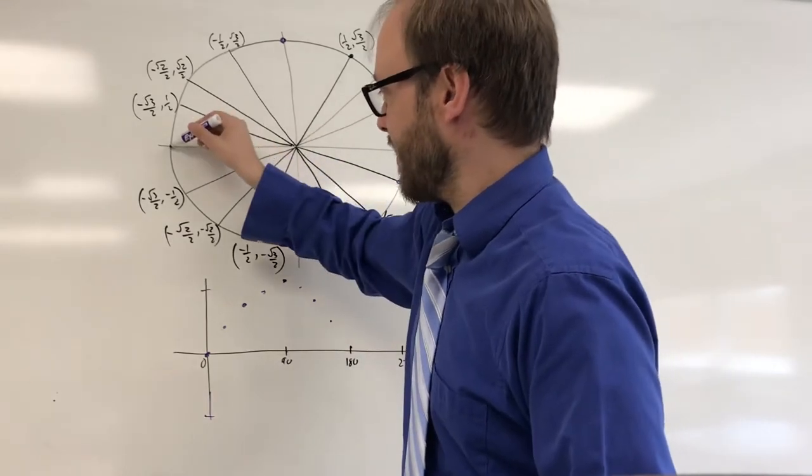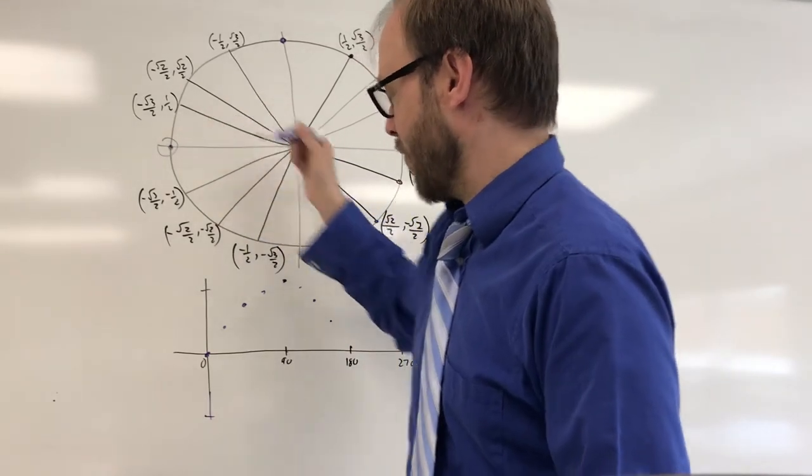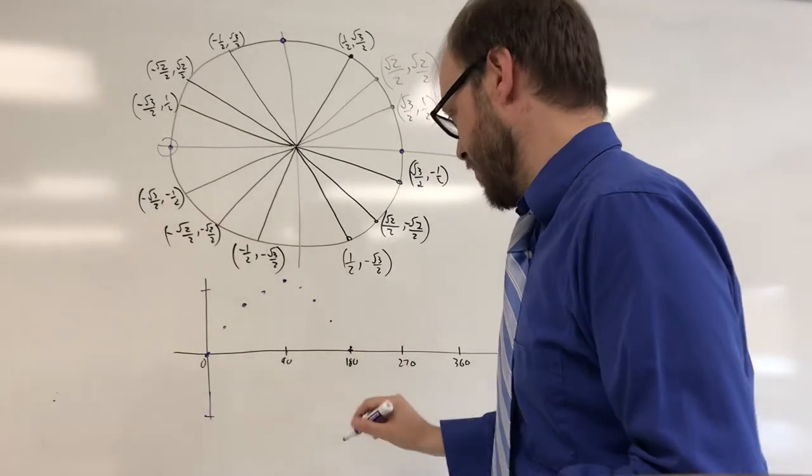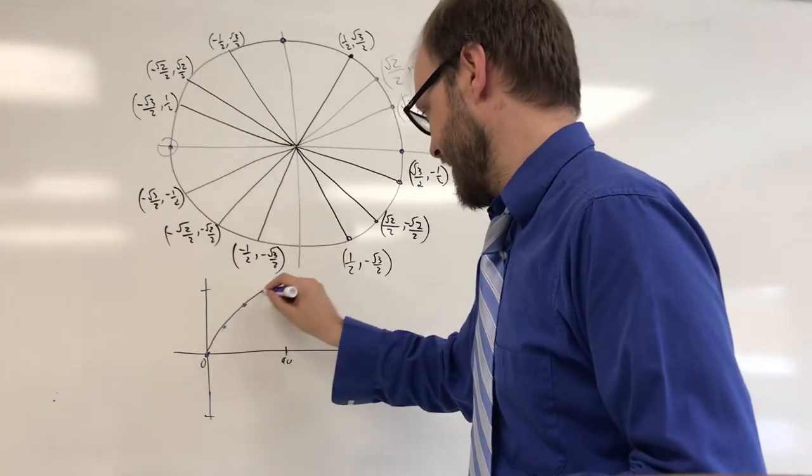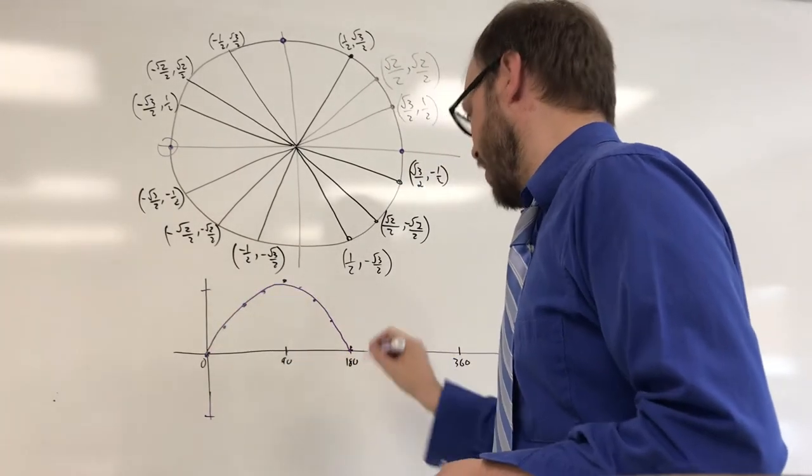And then finally, when you get over here to 180-degree angle, the y-coordinate is 0, and we're back down to the axis. And so you get that first half of the arc.